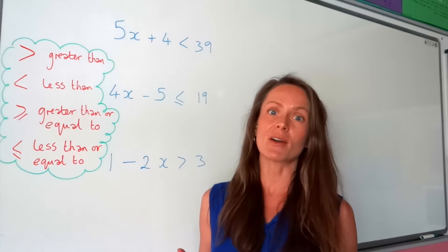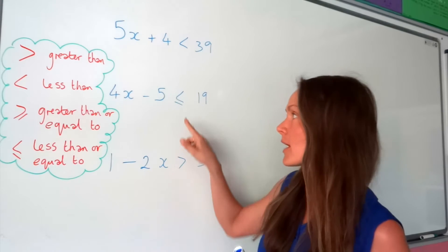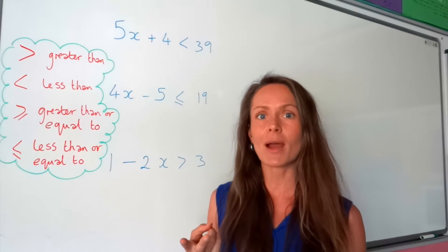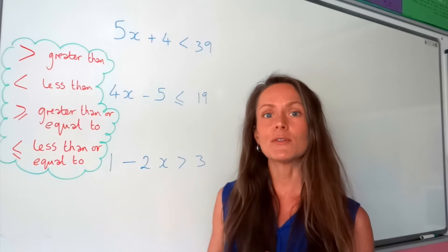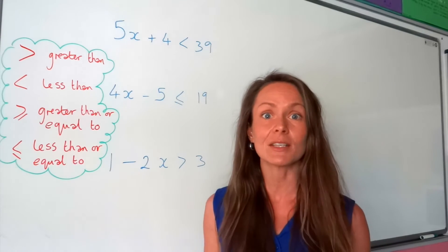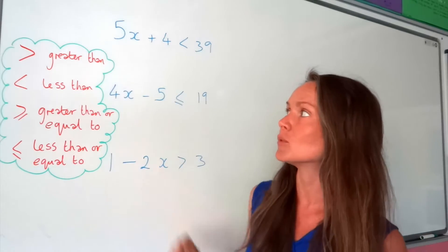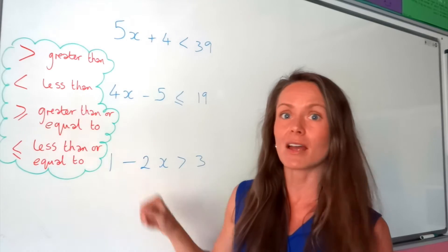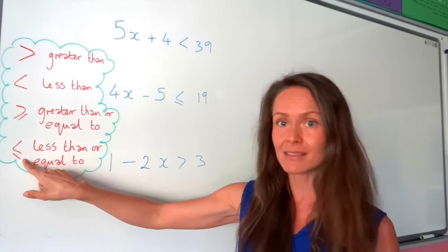The other important thing you need to remember is that sometimes the greater than or less than symbol turns around the other way. It only flips if you find yourself multiplying or dividing the inequality by a negative number. This symbol means greater than, this one is less than, this one is greater than or equal to, and this one means less than or equal to.